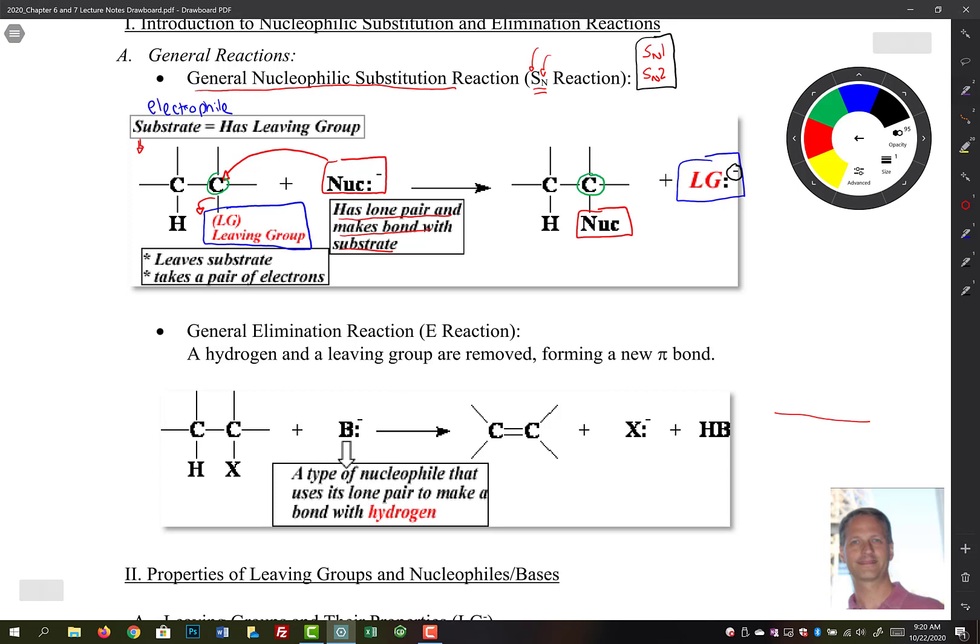And then the other type of reaction that we're going to look at down here below is the elimination reaction. We call this an E reaction. So for us, we're going to look at E1 and E2. So these are going to have different mechanisms also.